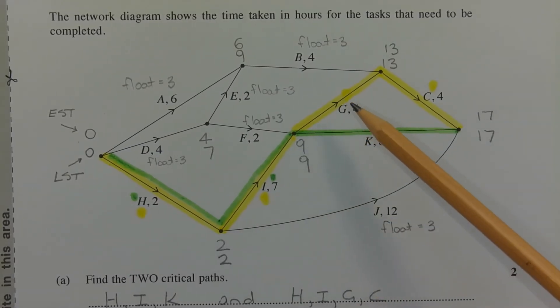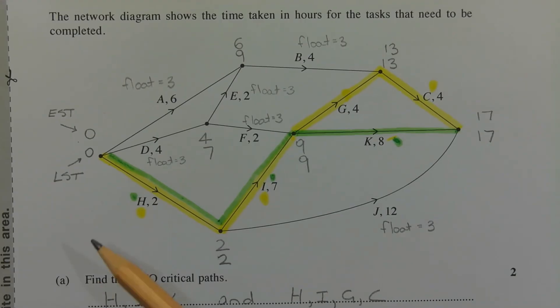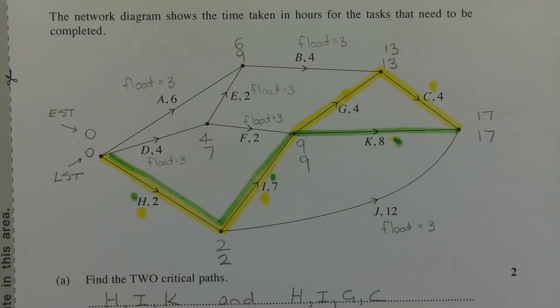In other words, if we chose, let's say, activity G and reduce that by three hours, that's all well and good for the critical path that's marked in yellow. But the critical path that's marked in green will still take 17 hours, so that does not help our cause. And for the same reason, activity C cannot be reduced because it does not affect the critical path that's marked in green. We have to choose either activity H or activity I to reduce, and it can only be one or the other. It can't be a combination of both.